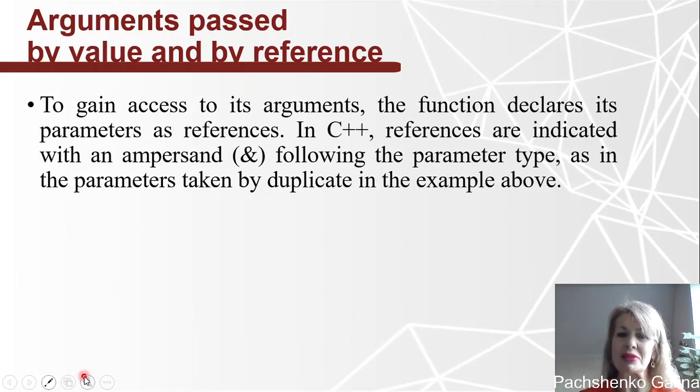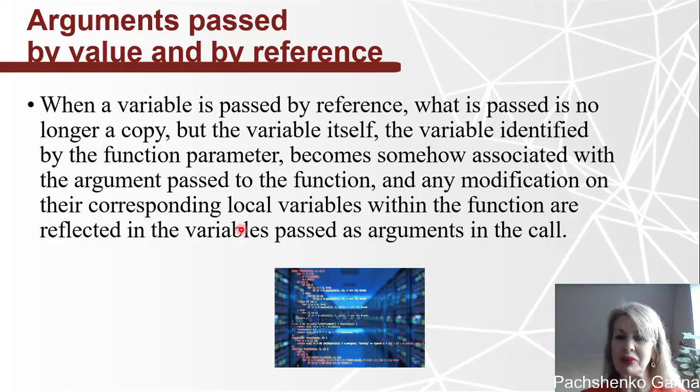To gain access to its arguments, the function declares its parameters as references. In C++, references are indicated with an ampersand sign following the parameter types, as in the parameters taken by duplicate in the example above. When a variable is passed by reference, what is passed is no longer a copy but the variable itself. The variable identified by the function parameter becomes somehow associated with the argument passed to the function, and any modifications on their corresponding local variable within the function are reflected in the variables passed as arguments in the call.